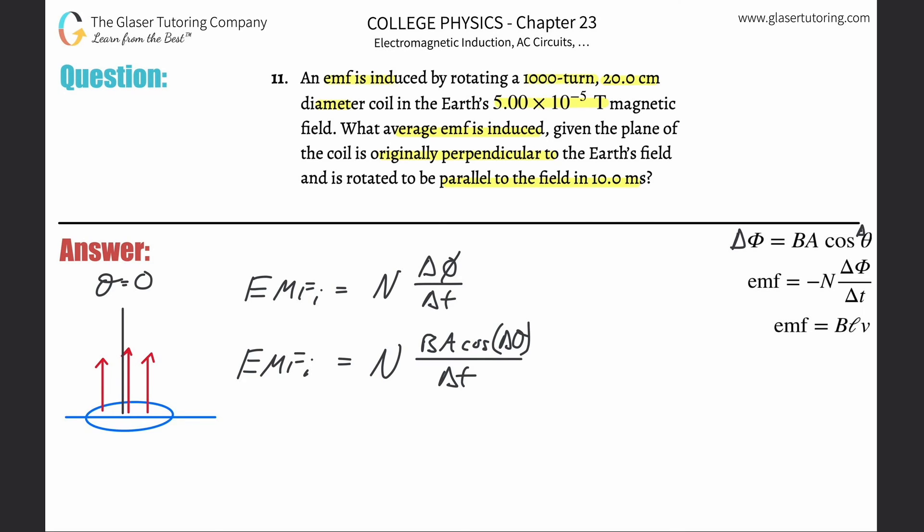And then it says that it's going to be rotated so that it's parallel to the field. So then what's going to happen is now this coil will be rotated to be parallel with the field. And again, the magnetic field hasn't changed, so it's still pointing directly up.